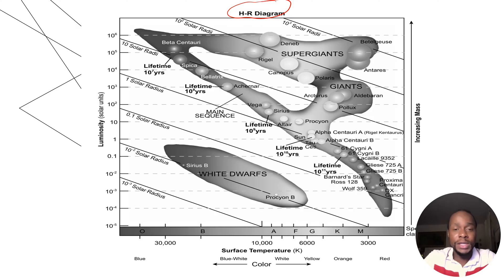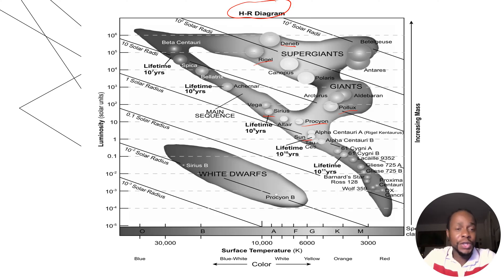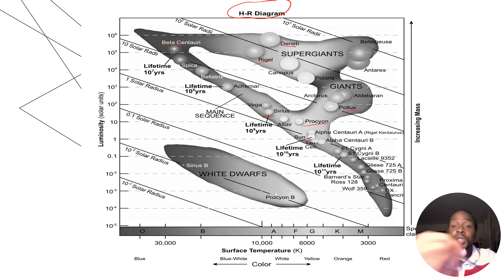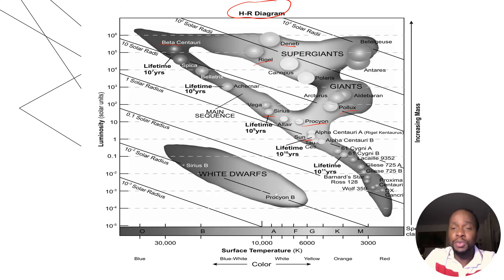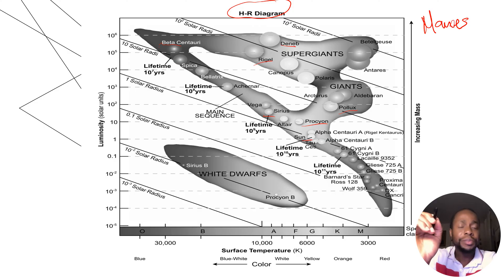From the get-go, you can see the names of various stars: Deneb, Rigel, Pollux, Procyon, Sirius, our own star the Sun, and Beta Centauri. So the first thing this page provides you with is the names of various stars.